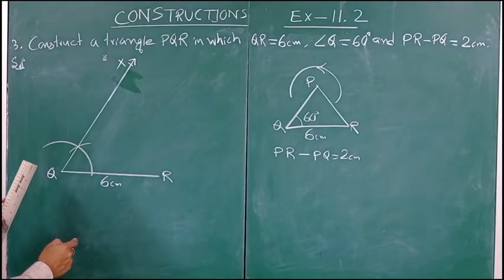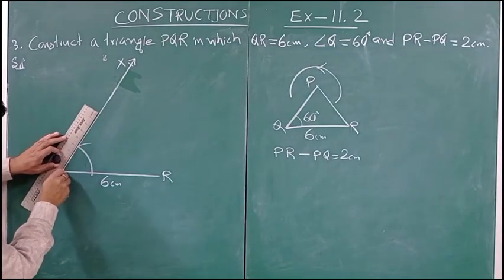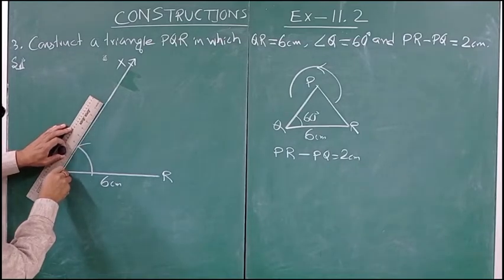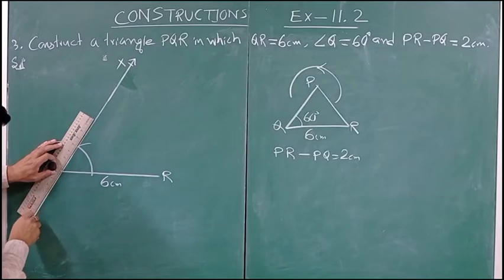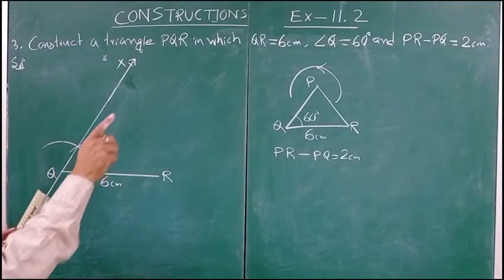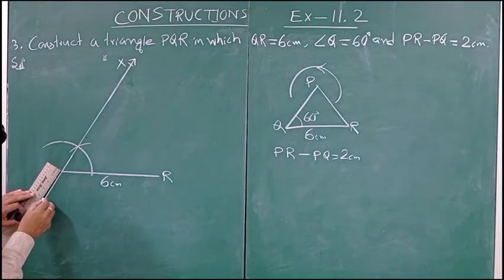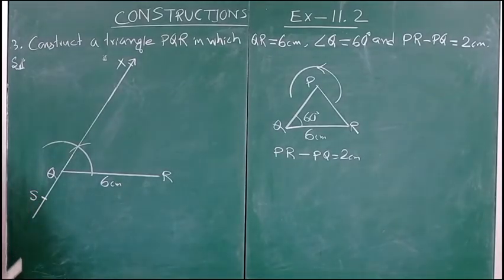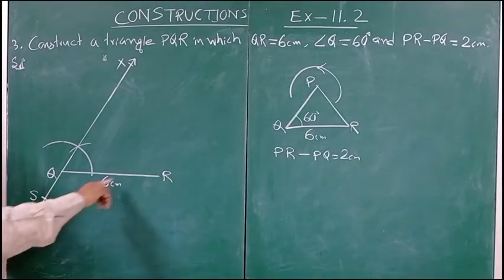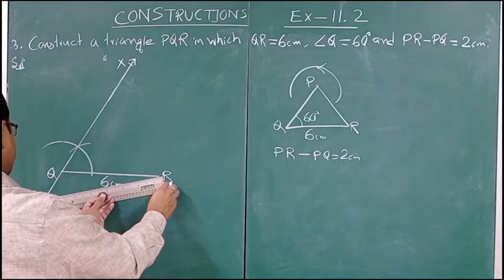As this is different from question number 2, we shall produce QX downward. The difference is 2 centimeter, so let us mark 2 centimeter here going downward. This point is marked as S.